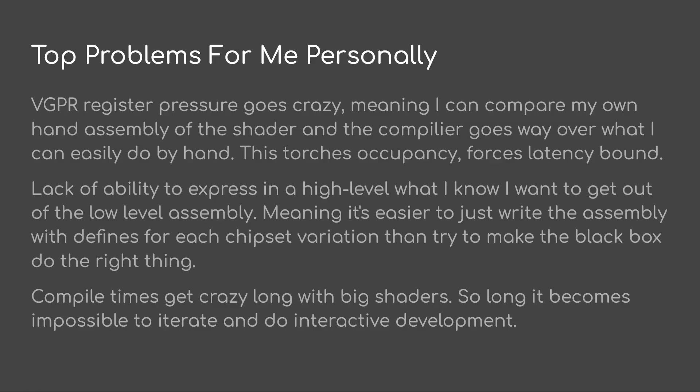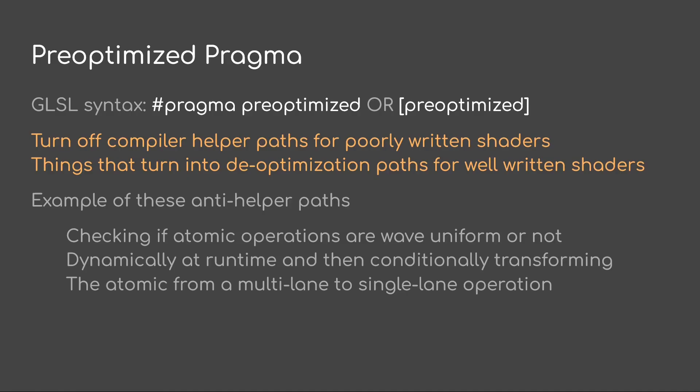Compile times get so long it becomes impossible to iterate and do interactive development. Now let's dive into some concrete suggestions. The first one is a pre-optimized pragma — the idea is to turn off compiler helper paths for poorly written shaders, things that turn into de-optimization paths for well-written shaders.